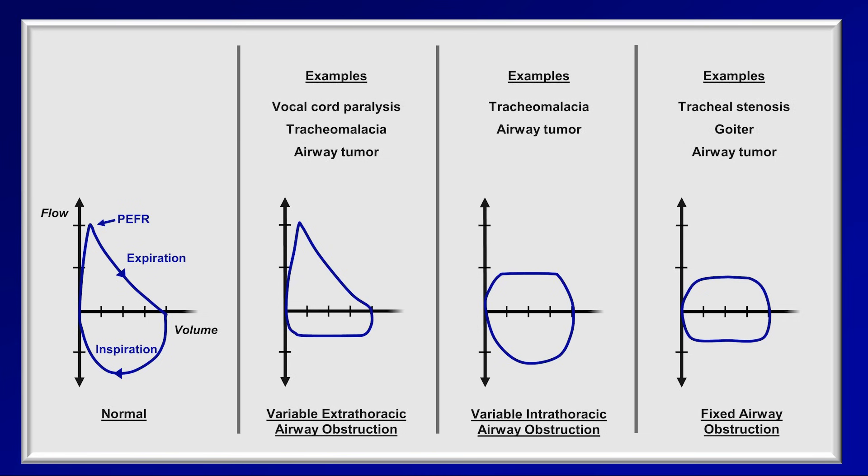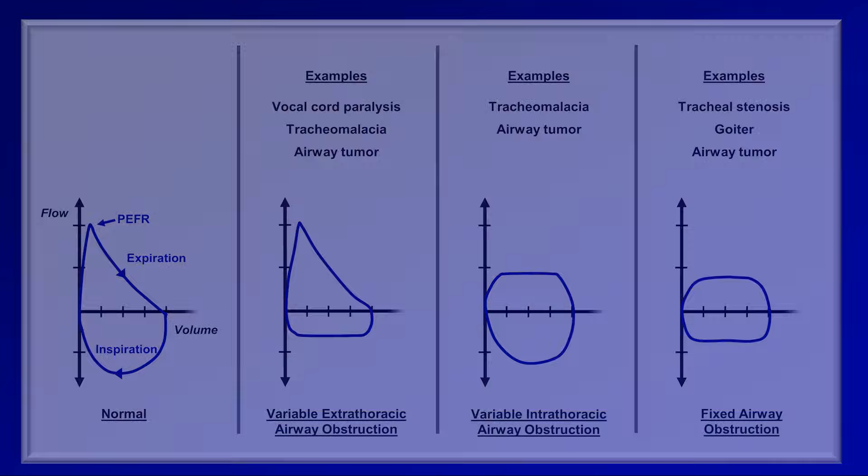Some etiologies of the various types of upper airway obstruction are presented. Vocal cord paralysis, as a cause of variable extrathoracic obstruction, is probably the most classic example. In addition to diagnosis, spirometry has a few other roles — for example, in COPD, the severity of disease can be staged based on the FEV1.